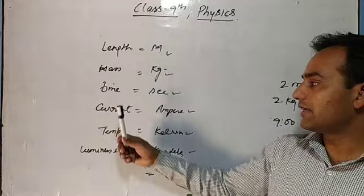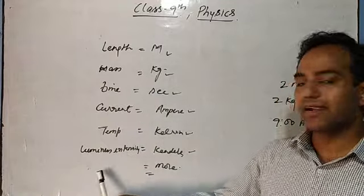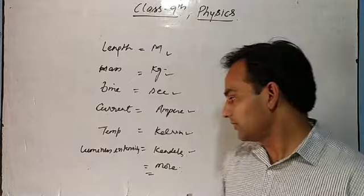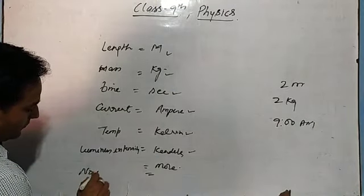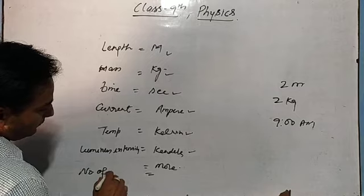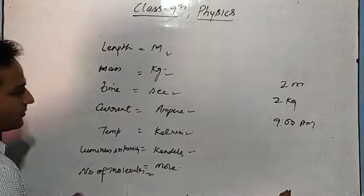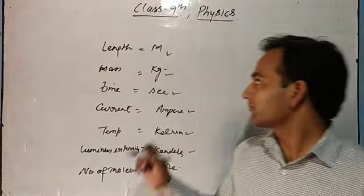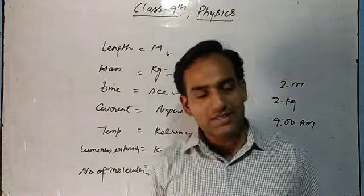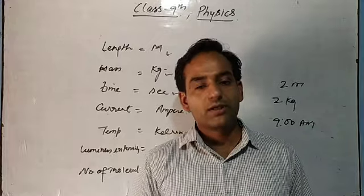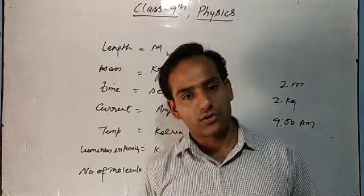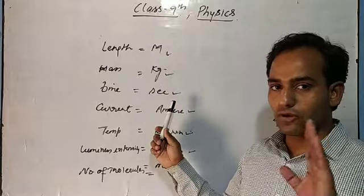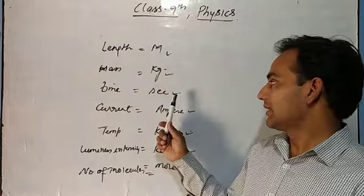These seven fundamental units — meter, kilogram, second, ampere, Kelvin, candela, mole — are used for length, mass, time, current, temperature, luminous intensity, and the number of molecules in a substance. Besides these seven, we also have radian and steradian. But before telling you about radian and steradian, meter is for length, kilogram is for mass, and second is for time.